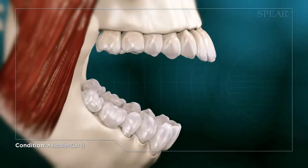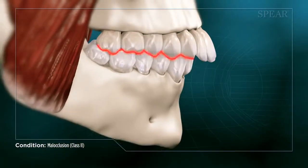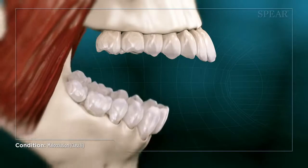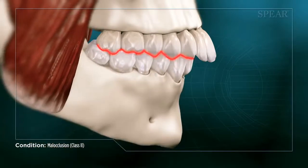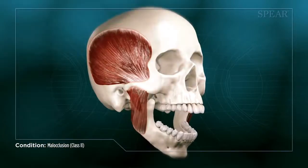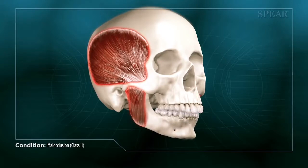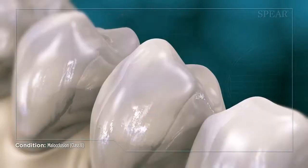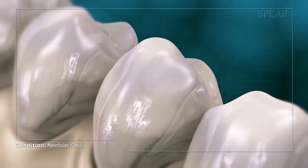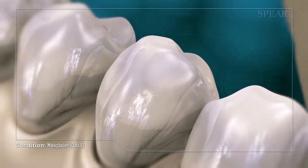Bite misalignment, or malocclusion, can result in a number of consequences as the teeth come into contact in unintended ways. These can include jaw and muscle pain, difficulty eating and speaking, excessive or uneven tooth wear, and cracking and potential loss of the affected teeth.